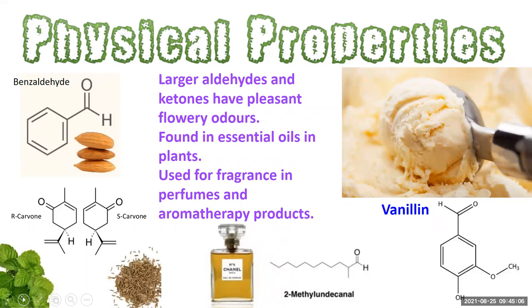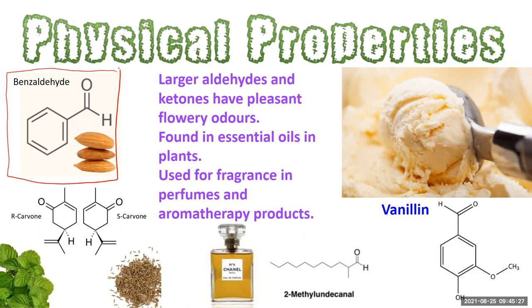The longer-chain aldehydes and ketones, however, have really pleasant, flowery odors. They're found in essential oils in plants and used as flavorings. Benzaldehyde is responsible for the flavor of bitter almonds. The two optical isomers of carvone — the R-isomer is present in spearmint oil, and the S-isomer is responsible for the smell of caraway seeds. And vanillin, near and dear to my heart, is the compound responsible for the vanilla flavor whether natural or artificial.